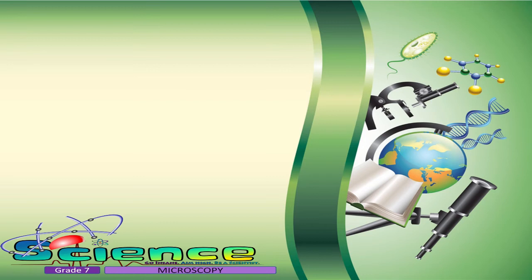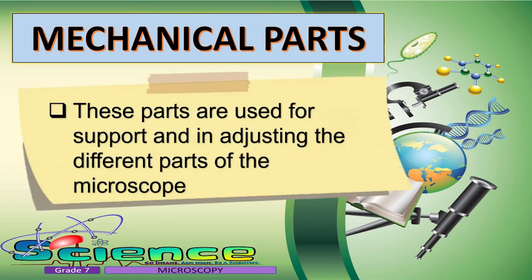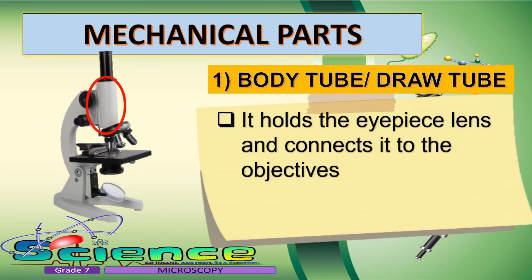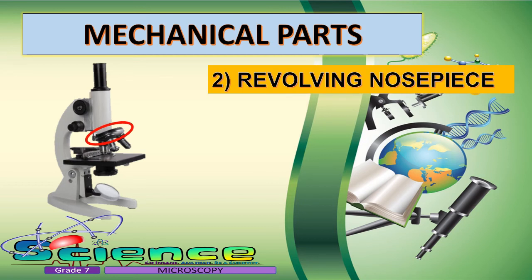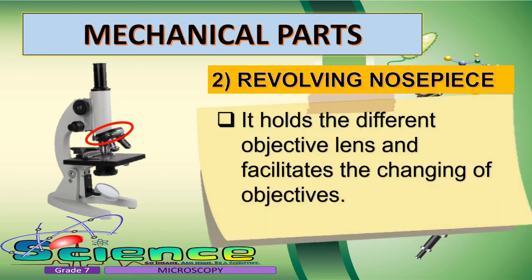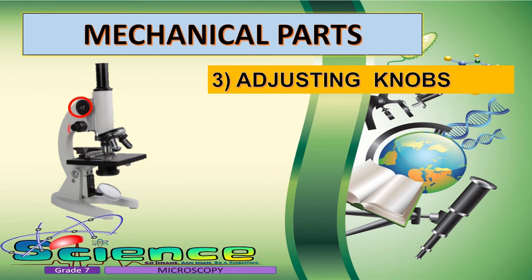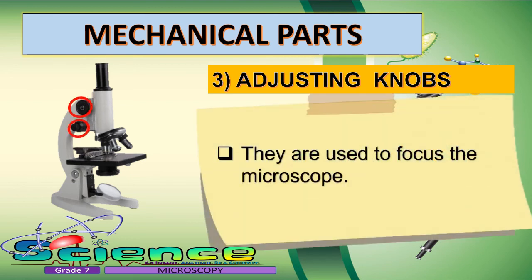Let us now explore the mechanical parts of the microscope. These parts are used for support and for adjusting the different parts of the microscope. The body tube, or draw tube, holds the eyepiece lens and connects it to the objective. Next is the revolving nosepiece, which holds the different objective lenses and facilitates the changing of objectives — this is the part you turn to change the objective lens you want to use.